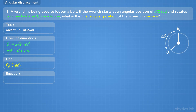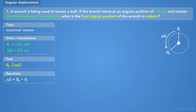Here's an example of what this might look like. We have a line representing the wrench, and it has an initial angular position, a final angular position, and an angular displacement between them, which is pointing counterclockwise. Since we're working with angular displacement, we can use the equation: delta theta equals theta final minus theta initial. We're given delta theta and theta initial, so we can find theta final.